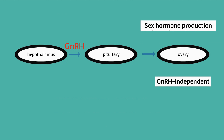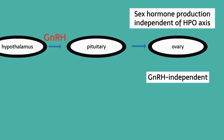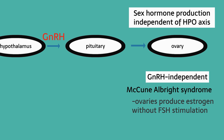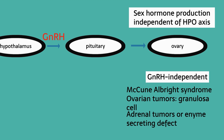For GnRH-independent causes, there is sex hormone production independent of HPO axis stimulation. McCune-Albright syndrome results from a defect in cellular regulation causing the ovary to produce estrogen without FSH stimulation; it is also characterized by multiple bone fractures and café-au-lait spots. Other causes include ovarian tumors such as a granulosa cell tumor, adrenal tumors or enzyme-secreting defects such as congenital adrenal hyperplasia, and androgenic causes such as ingestion of oral contraceptives.